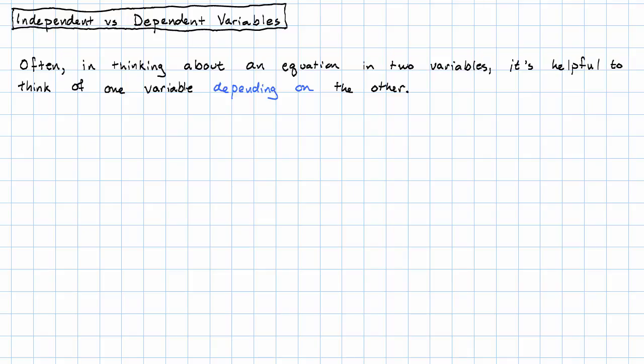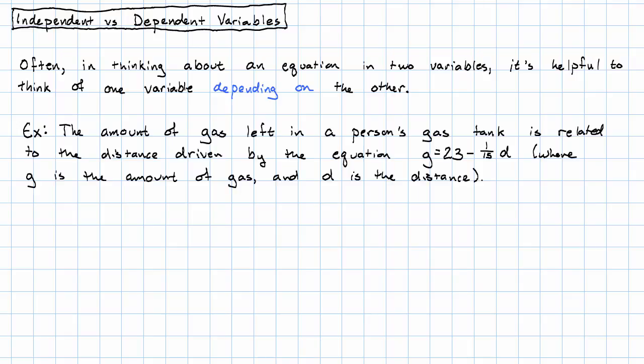And very often, this dependency comes from real life. For example, suppose I told you that the amount of gas left in a person's gas tank is related to the distance driven by this equation. G is 23 minus a 15th D, where G is the amount of gas, and D is the distance we've driven.